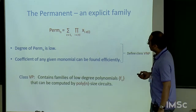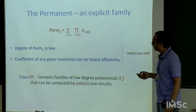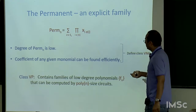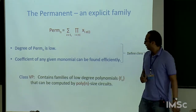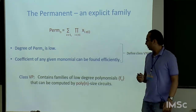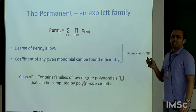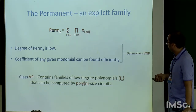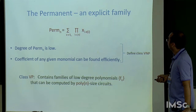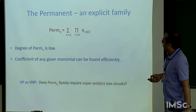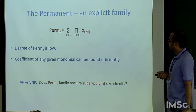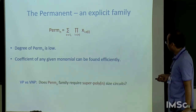The class VP is the family of all low-degree polynomials (poly degree) that can be computed by a poly(n) size circuit, where n is the number of variables. The VP versus VNP question can be formulated as: show that the permanent family requires super-poly(n) circuit size.